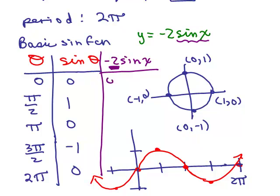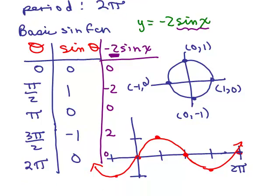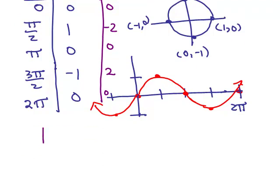And that'll give me, well, 0 times negative 2 is still 0, 1 times negative 2 is negative 2, 0 times negative 2 is 0, negative 1 times negative 2 is positive 2, and 0. So if I want, I can write those ordered pairs for my key points.